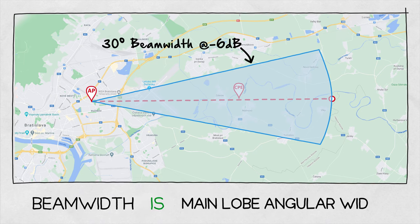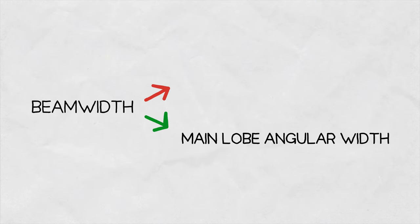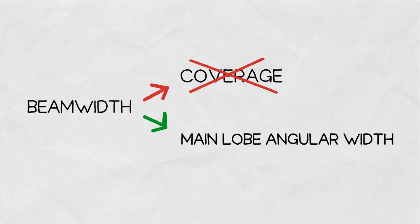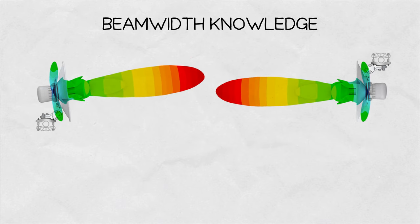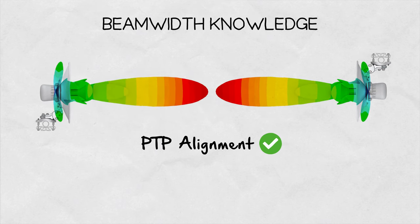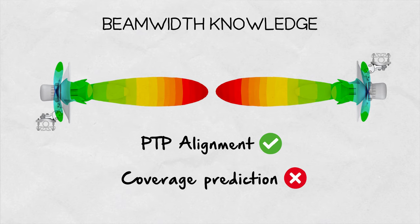Beamwidth defines the angular width of antenna mainlobe minus 3 or minus 6 dB below the maximum gain. Despite the beamwidth and coverage being connected, it is a huge oversimplification to consider them the same thing. While the knowledge of the beamwidth is helpful when aligning point-to-point links or deciding what application an antenna is good for, it will definitely lead to misleading results if you rely on it for coverage prediction.